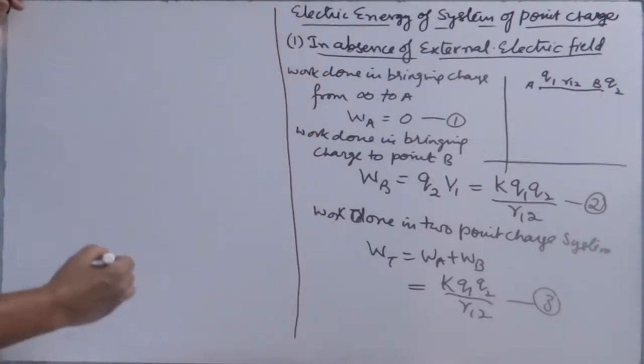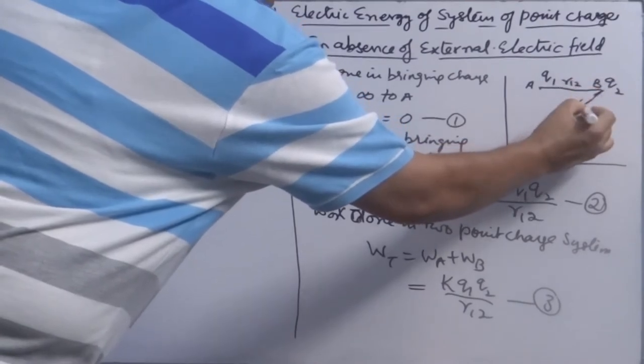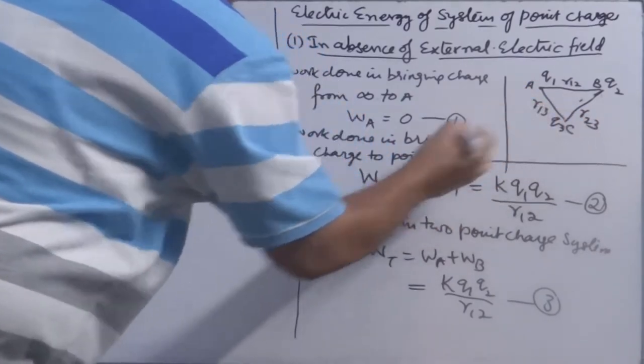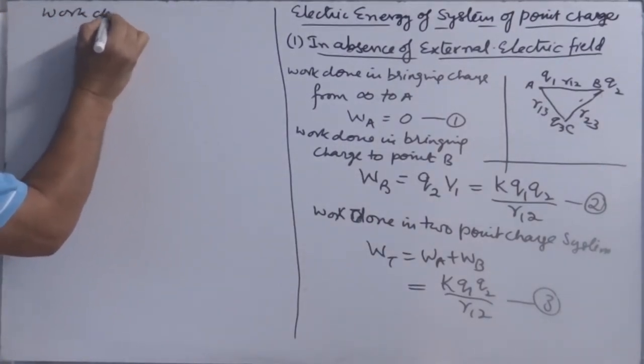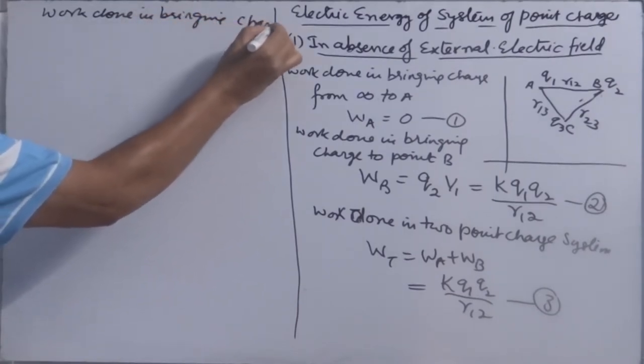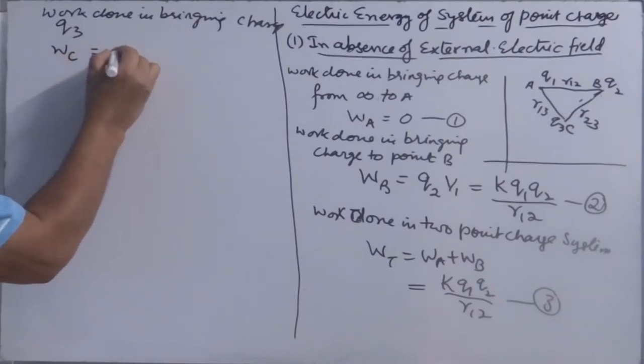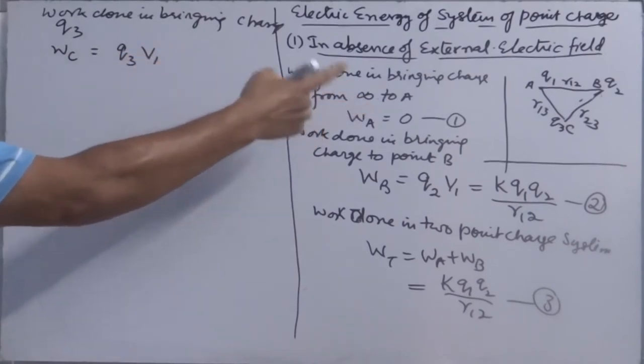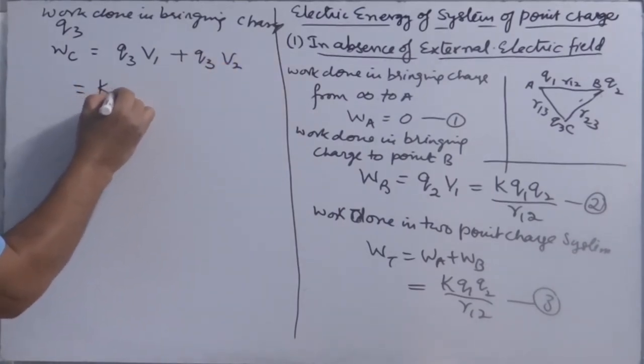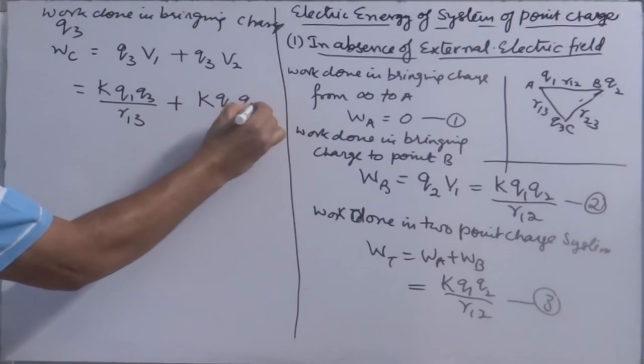Now, I brought charge Q3 and placed at point C. Distance between Q2 and Q3 is R23. Between Q1 and Q3 is R13. Work done in bringing charge Q3, WC, is equal to charge Q3 against potential of Q1 plus charge Q3 against potential of Q2. So it is K Q1 Q3 over R13 plus K Q2 Q3 over R23.